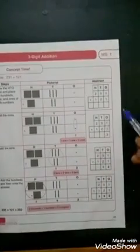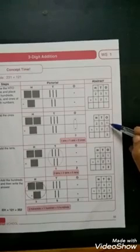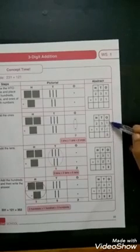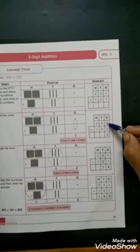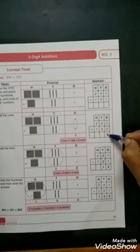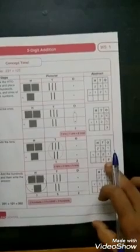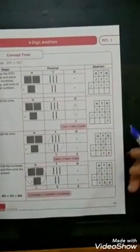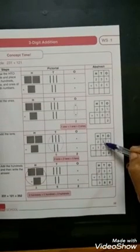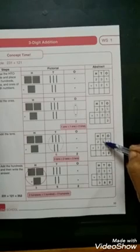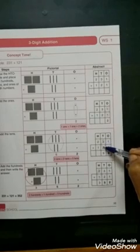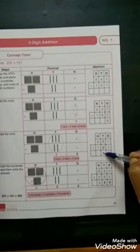And again one is in the hundreds place. So, what is the second step? Yes. Very good. We are going to add the ones place numbers, isn't it? Yes. Here one and also one. So, one plus one which is equal to two. So, second step is over. What is the third step? Yes. We are going to add the tens place numbers. Here three and two. So, three plus two. Yes. Very good. Five.